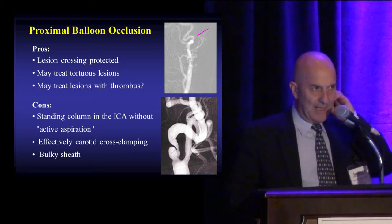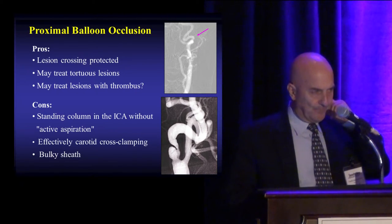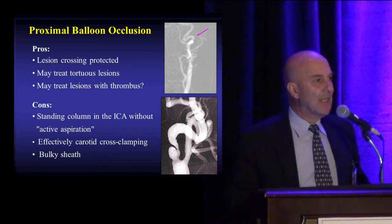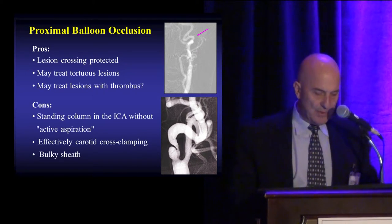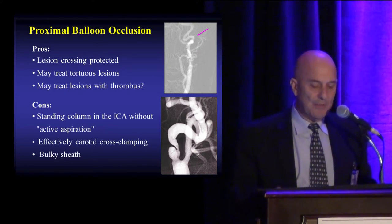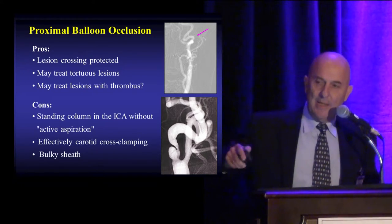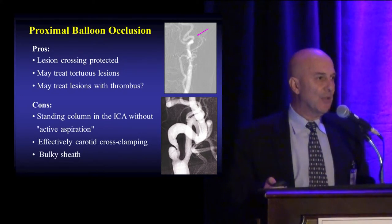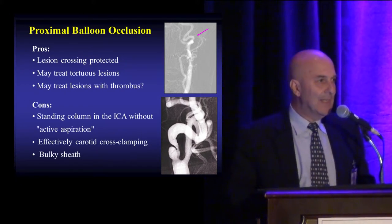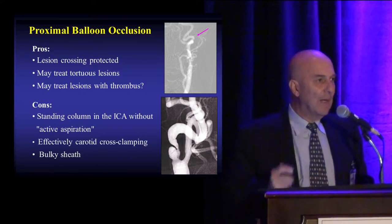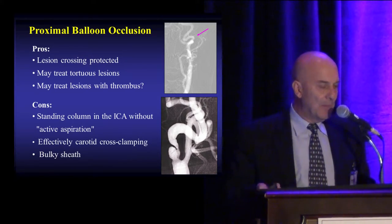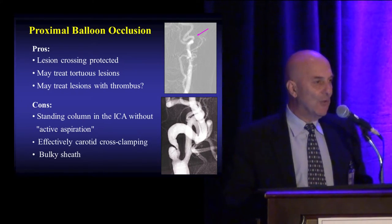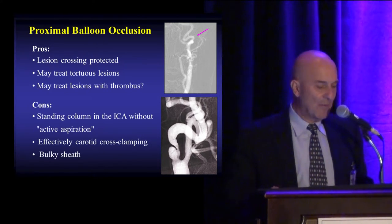With proximal occlusion, we can treat tortuous distal internal carotid arteries and more complex lesions, such as those in symptomatic patients with thrombus as part of the lesion. What you obtain is flow stagnation — a column of blood that is not moving north, but in theory is not being aspirated either unless you do it actively, which is what most operators are doing.